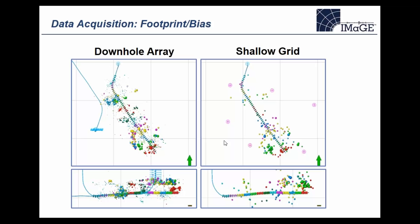Comparing the shallow grid to the downhole example — this is exactly the same hydraulic fracture image recorded with a different geometry. You can see the impact of decreased sensitivity: the shallow grid picks up only the bigger events. You still get the same general concept of fracture geometry length and distribution along the wellbore, but the depth section from the shallow grid shows less clustering of events, associated with increased depth uncertainty compared to the downhole array.